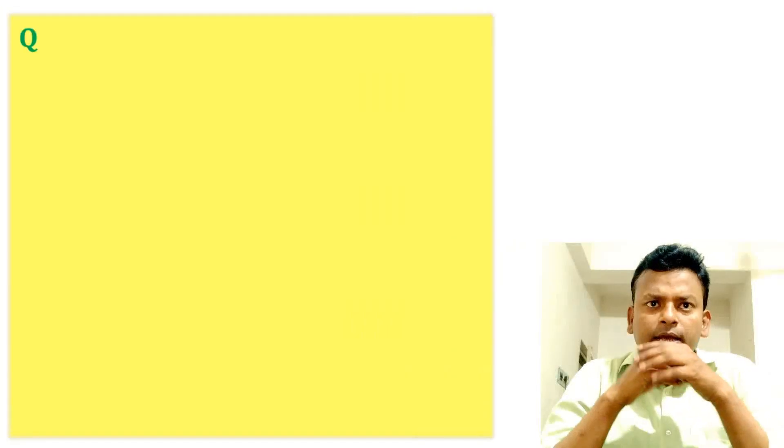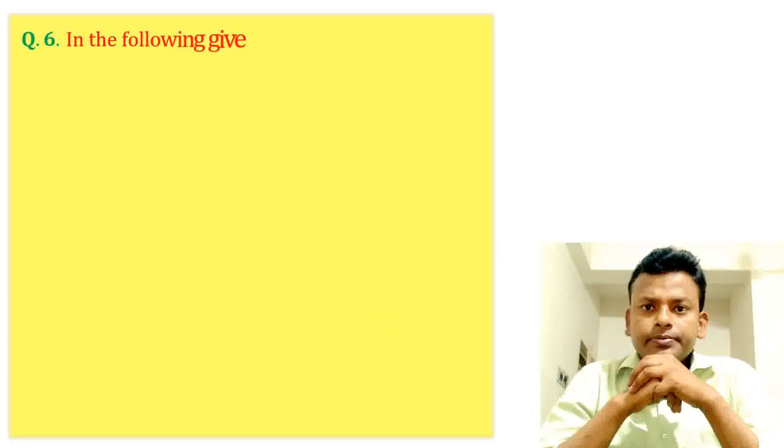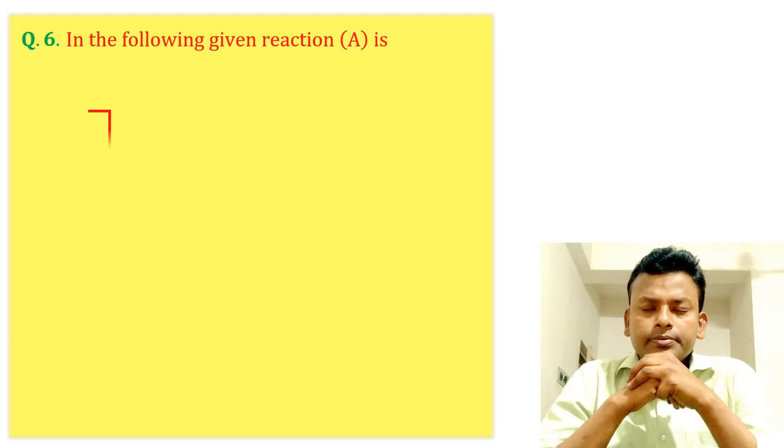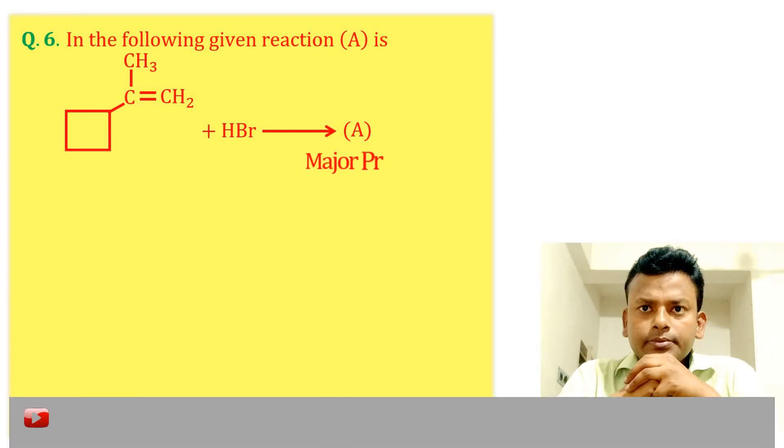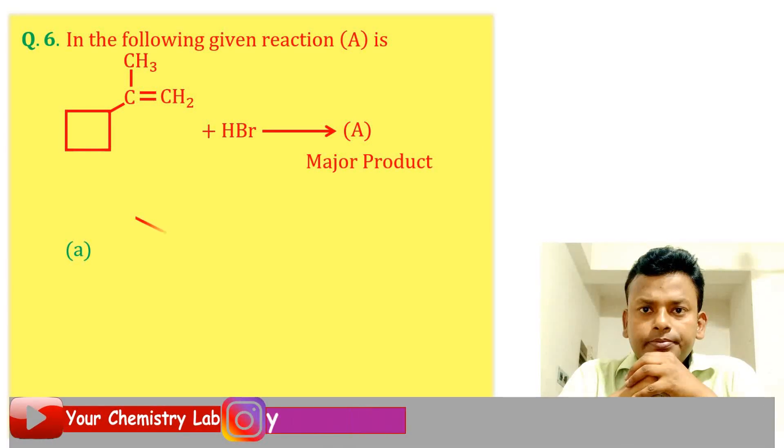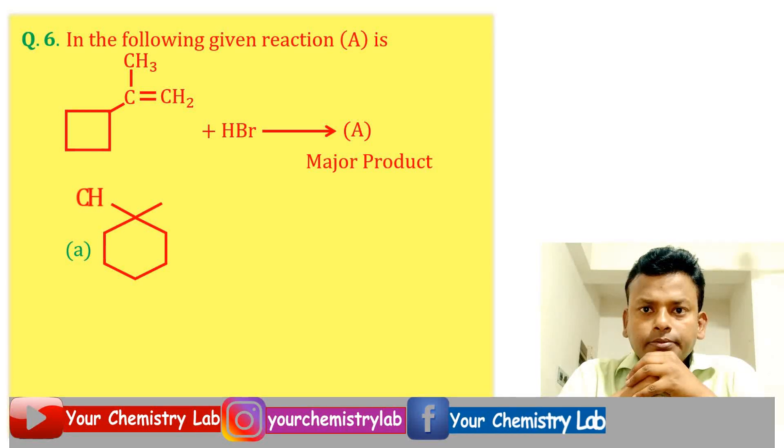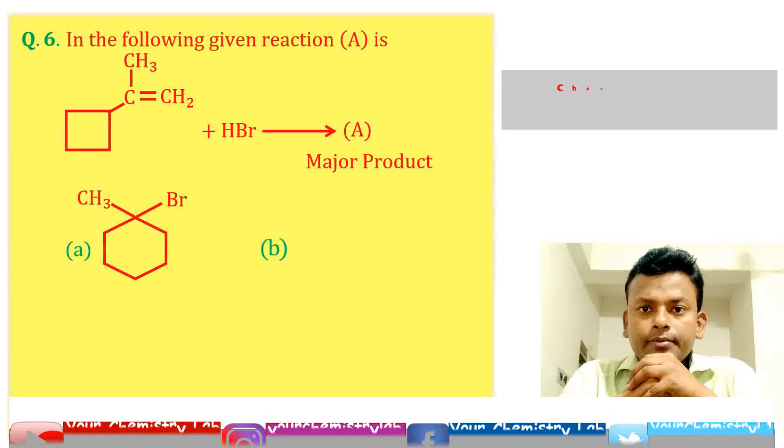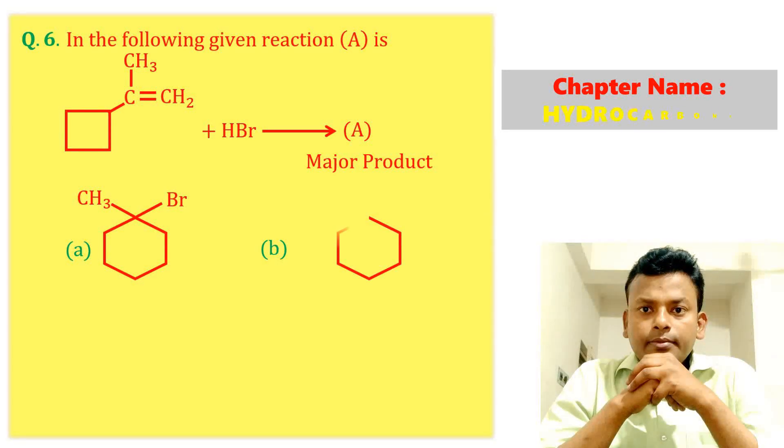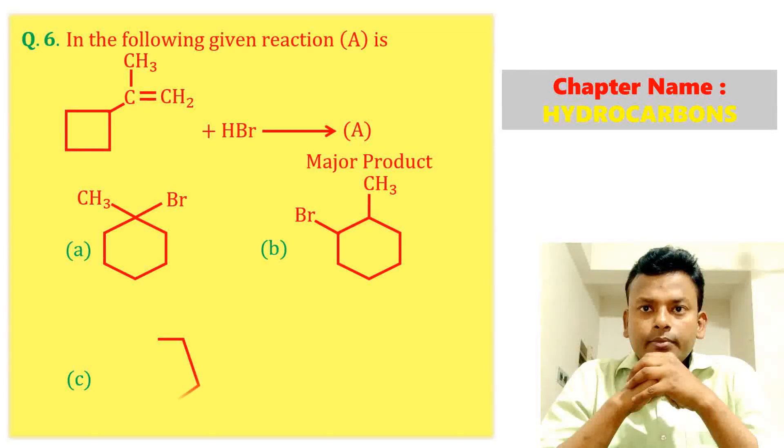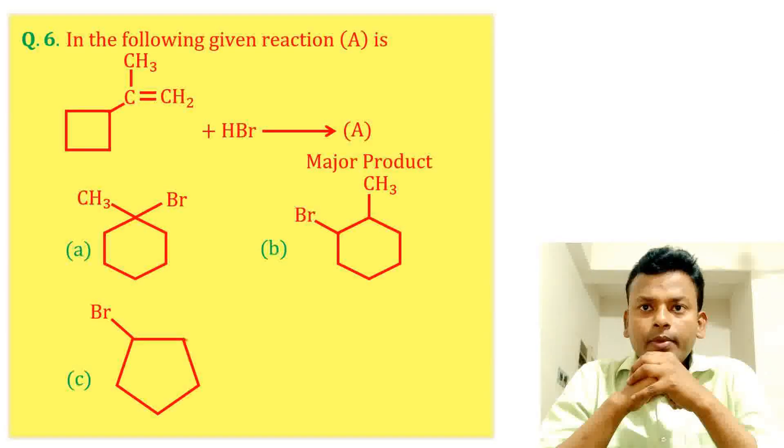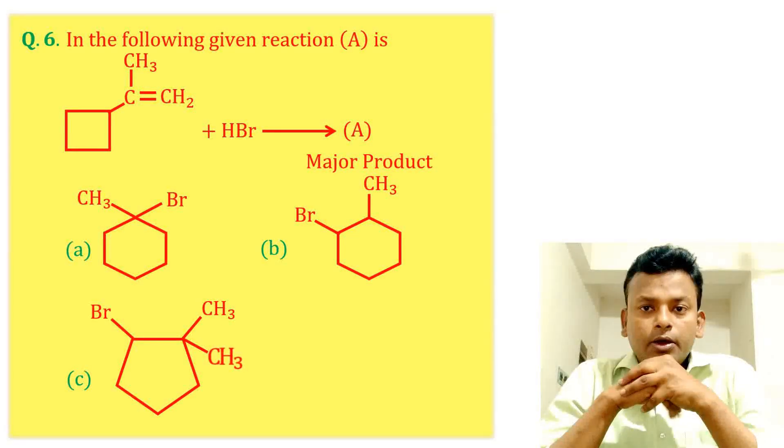Question 6: In the following given reaction, A is shown. Option A, Option B, Option C, Option D.